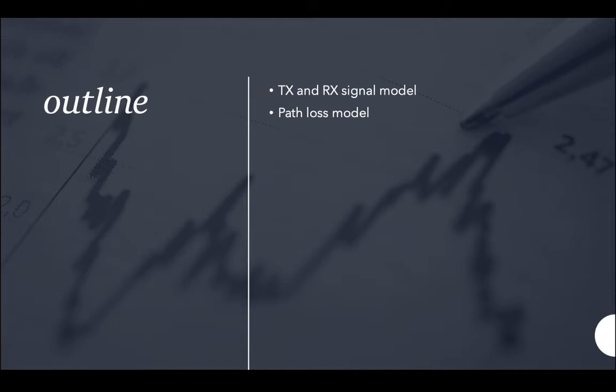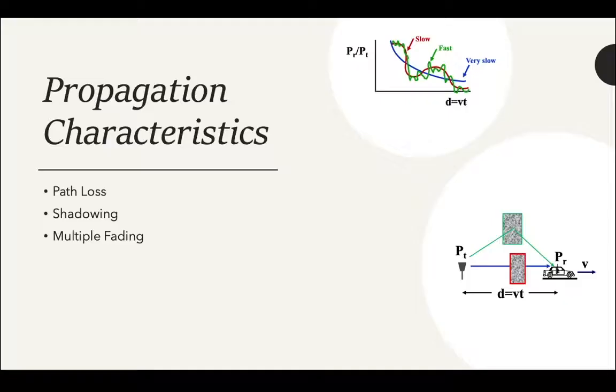This is the outline for the first couple of slides: transmitter and receiver signal model and path loss model. Propagation characteristics - why does wireless communication need propagation characteristics? Propagation characterization uses mathematical formulation to anticipate propagation behavior. The characteristics include path loss, shadowing, and multiple fading.